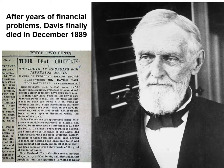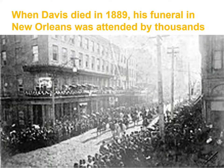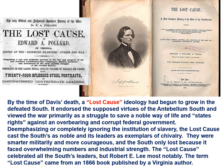After years of financial problems, Jefferson Davis finally died in December 1889. His funeral in New Orleans was attended by thousands. By the time of Davis's death, a Lost Cause ideology had begun to grow in the defeated South. It endorsed the supposed virtues of the antebellum South and viewed the war primarily as a struggle to save a noble way of life and states' rights against an overwhelming and corrupt federal government. De-emphasizing or completely ignoring the institution of slavery, the Lost Cause cast the South as noble and its leaders as exemplars of chivalry. Robert E. Lee became most notably the symbol of the Lost Cause.